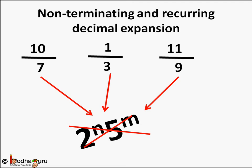The denominator — the q part — means fractions like 10 by 7, 1 by 3, and 11 by 9. Here the denominator cannot be expressed in the form 2 to the power n into 5 to the power m, where n and m are non-negative integers.